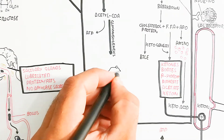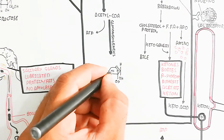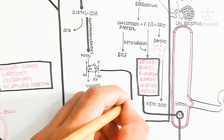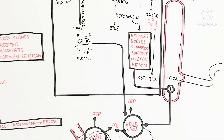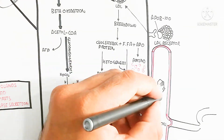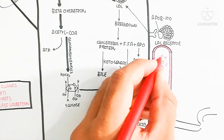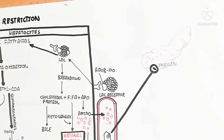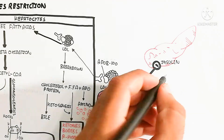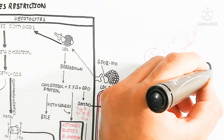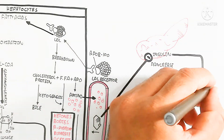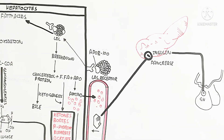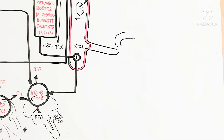Gluconeogenesis maintains the normal blood glucose level due to homeostasis, since glucose is important for brain function and the brain prefers glucose. However, with long-term carbohydrate restriction, glucose absorption by the brain decreases, and ketones — produced from fat — are absorbed instead. The low glucose signal inhibits insulin, and this insulin inhibition triggers the growth hormone, promoting muscle and bone growth.